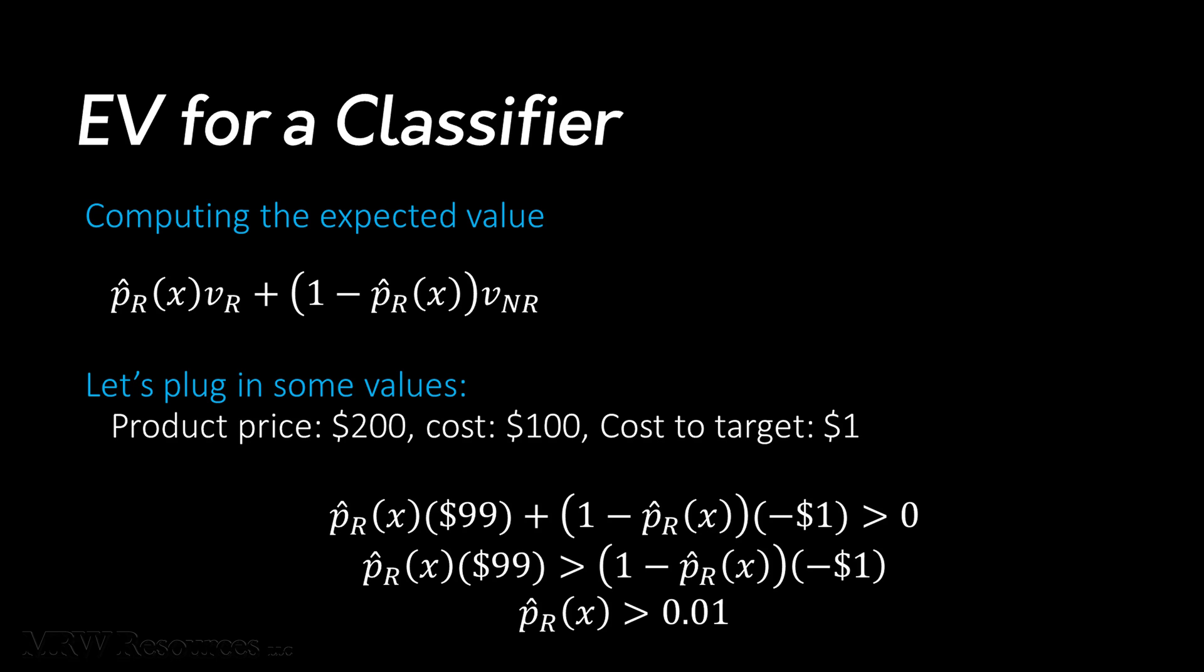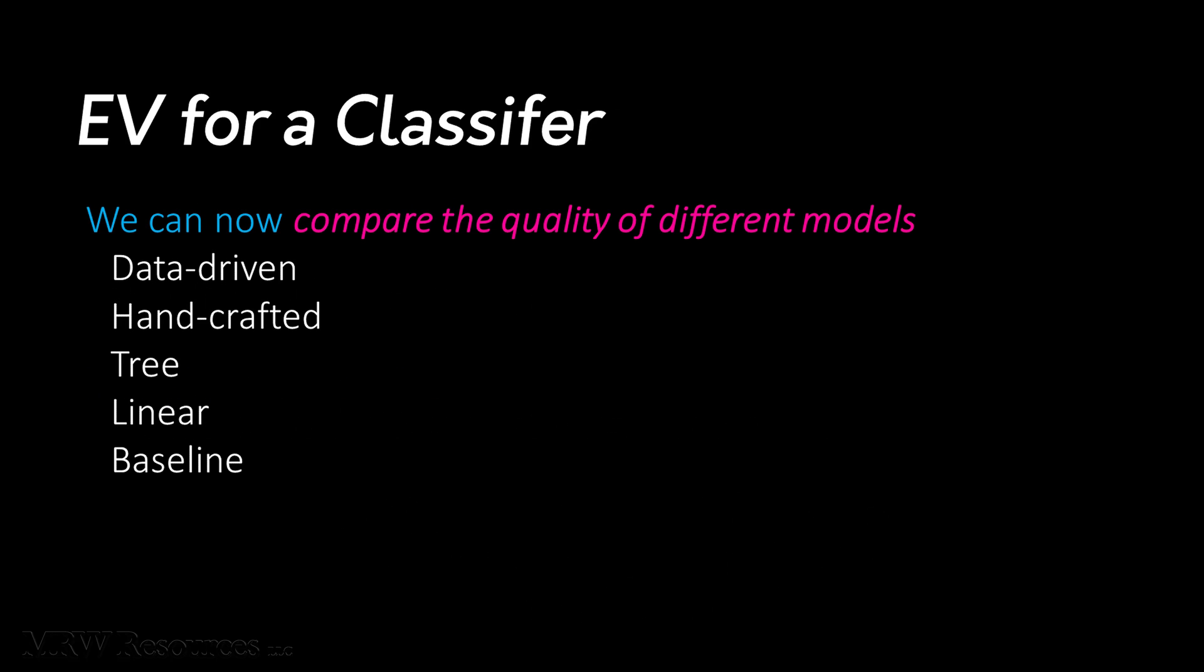So we should target the consumer as long as we estimate that the probability of response for that particular consumer is greater than 1%. Now we have the ability to compare the quality of different models and even modeling techniques against each other. Will our data-driven model outperform one that we create by hand simply using our domain knowledge? Does a tree outperform a linear discriminant? Do any of them outperform our baseline model? With the expected value framework, we now have a useful, practical approach to make these determinations.